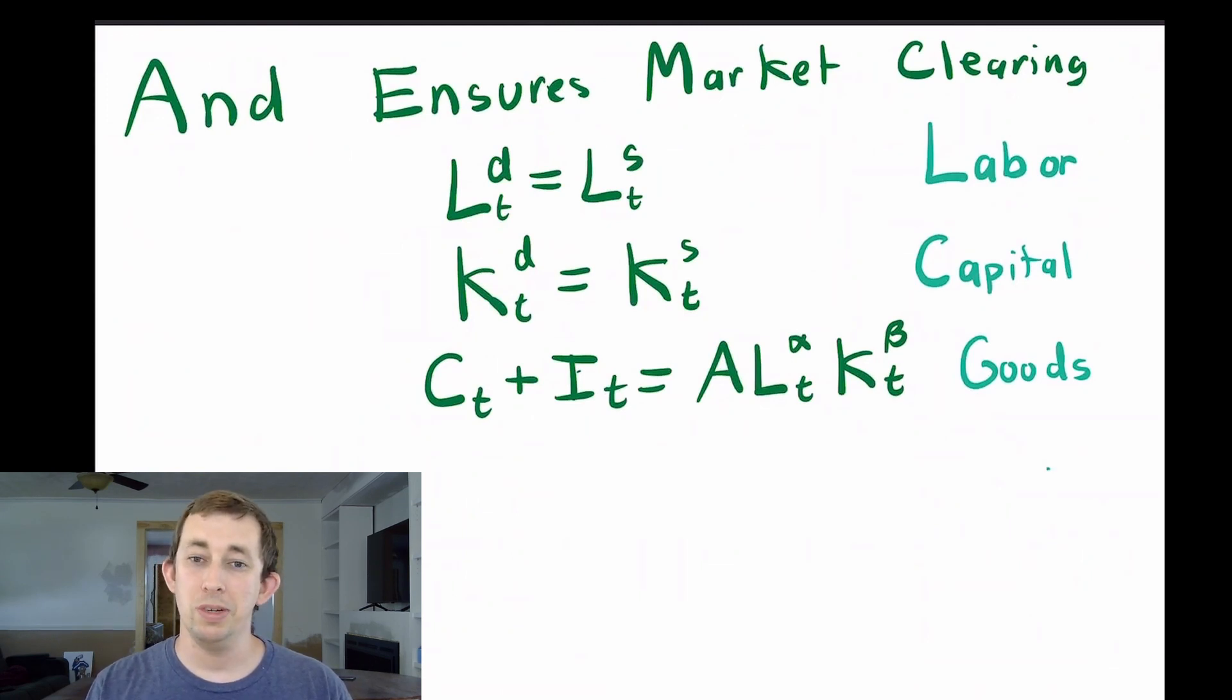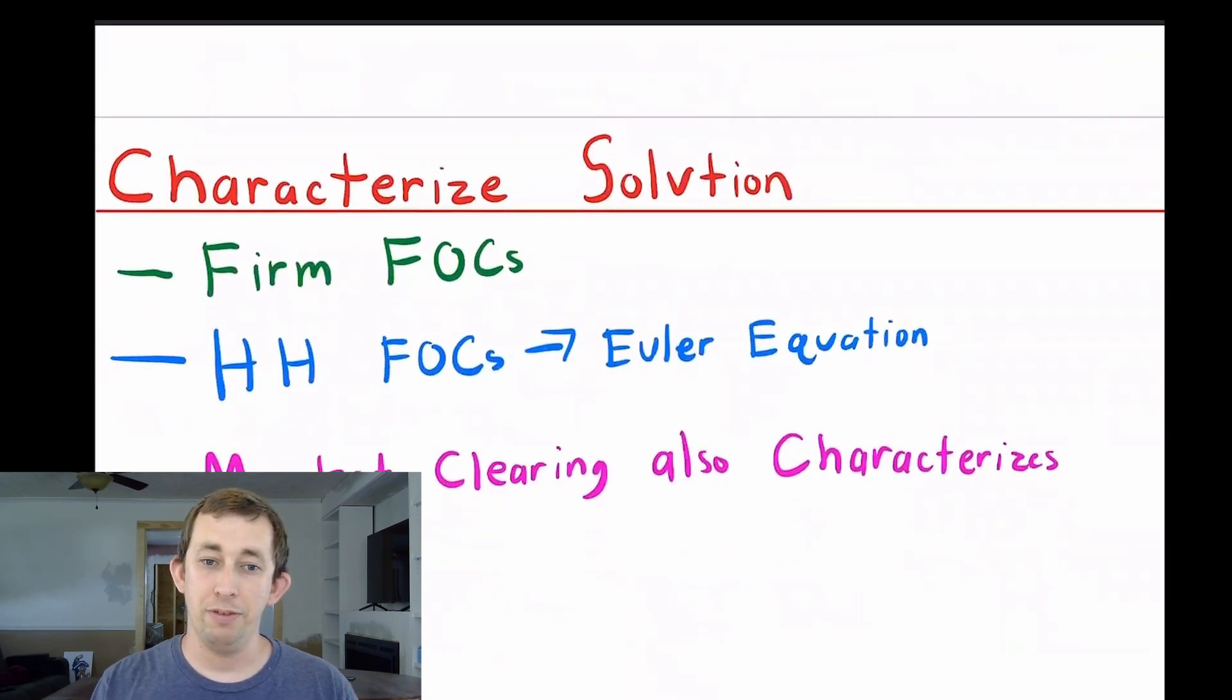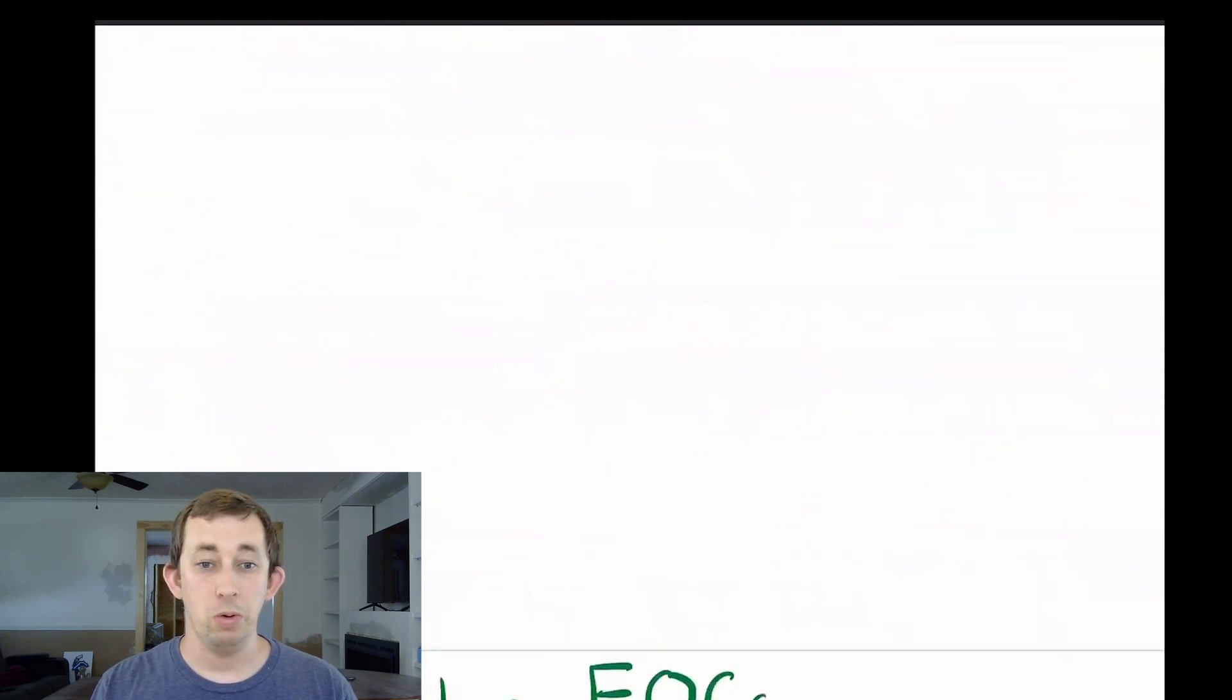As we solve for these first order conditions from the consumer problem and the firm problem, we need to keep in mind that the conditions that characterize the neoclassical growth model equilibrium include these three market clearing conditions. Let's start off with the firm first order conditions, then move on to the household problem, and then we'll be done.